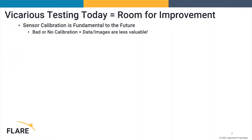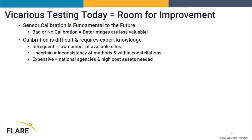We believe that sensor calibration is fundamental to the future of data and image quality. Bad, limited, or no calibration really makes the data available through satellite, airborne, and geosynchronous imagery less valuable than it could be. Better calibration at a pixel level provides the ability to maximize the amount of data that can be extracted by humans, machine learning, or artificial intelligence.